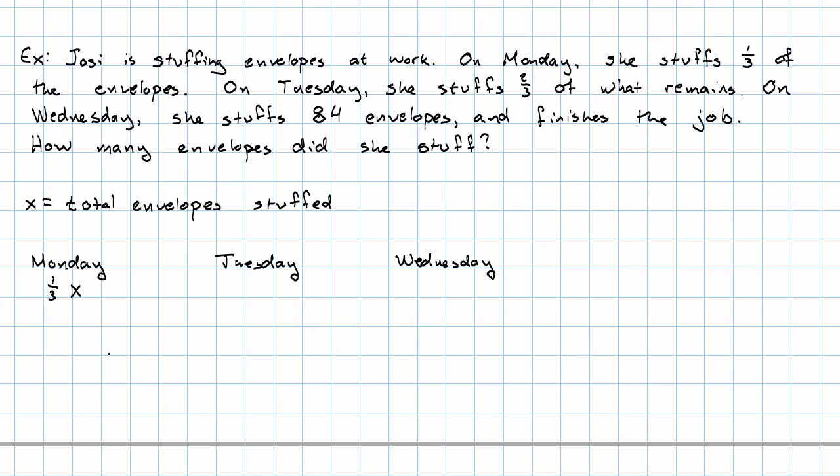On Tuesday, it says she stuffed two-thirds of what's left. What's left on Tuesday? Well, it's what she started with minus what she stuffed on Monday. So on Tuesday, what did she do? She stuffed two-thirds of what was left, so two-thirds of x minus a-third x. And we could simplify that now or we could simplify it later, whichever we like. On Wednesday, that's easy. She stuffed 84.